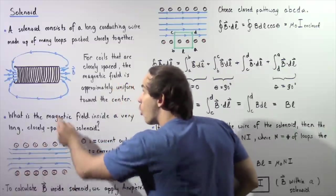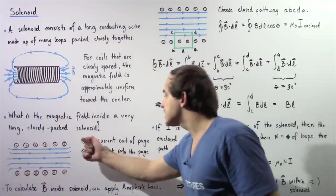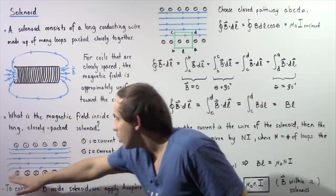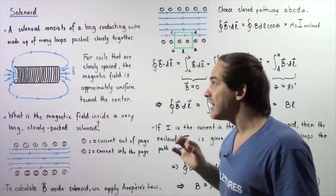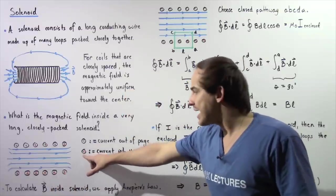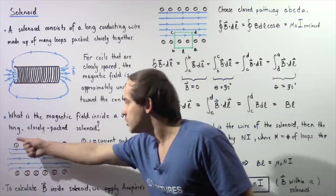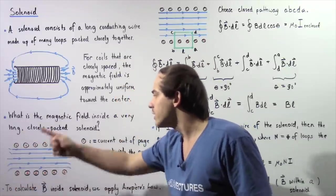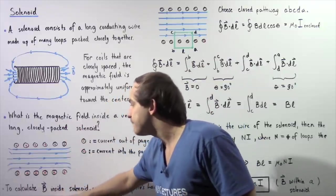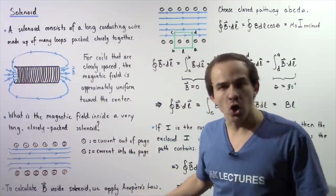In the top portion of the cross-section, the electric current is coming out of the board, shown by dots. In the bottom region, the electric current is going into the board, shown by the orange crosses. So the electric current travels in the following direction along our solenoid. To calculate the magnetic field inside, we must apply Ampere's law.